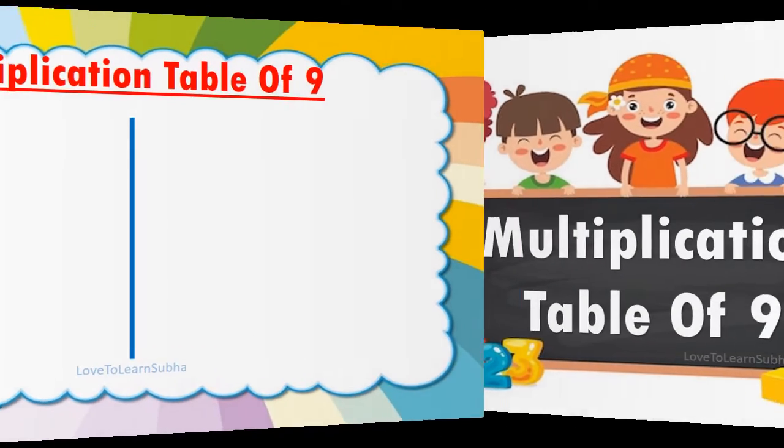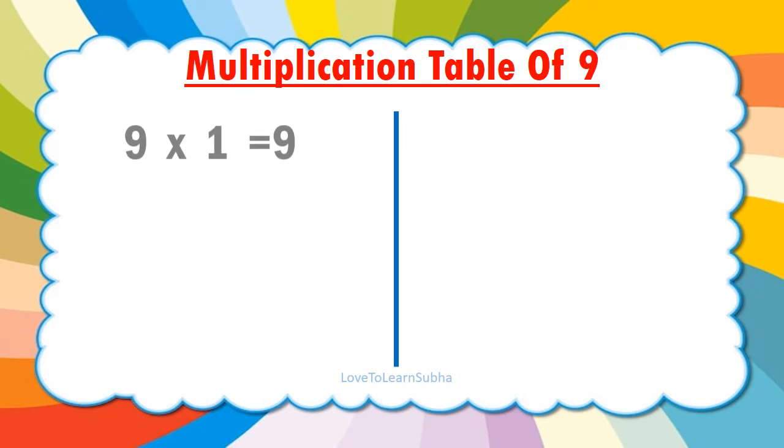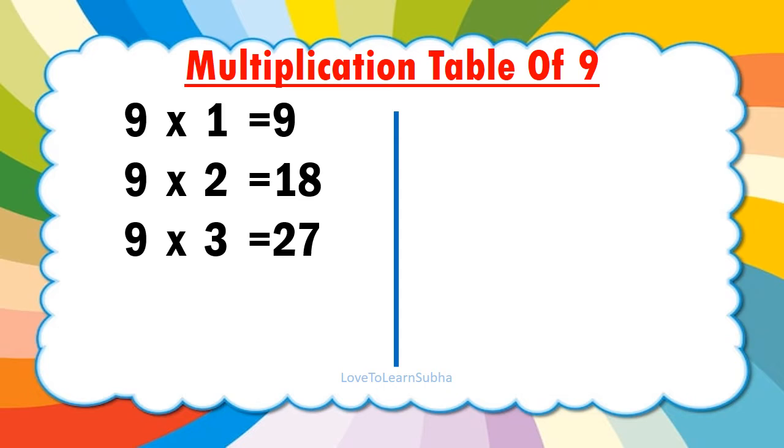Multiplication table of 9. 9 1's are 9. 9 2's are 18. 9 3's are 27. 9 4's are 36. 9 5's are 45.